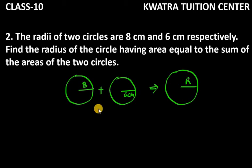Hello everyone, let's start with question number two. The radii of two circles are 8 centimeters and 6 centimeters respectively. Find the radius of the circle having area equal to the sum of the areas of the two circles.